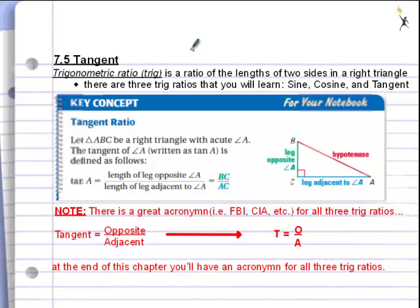It deals with angles and ratios. A ratio is a fraction where you compare two numbers. Trig ratios are ratios of the lengths of two sides in a right triangle.